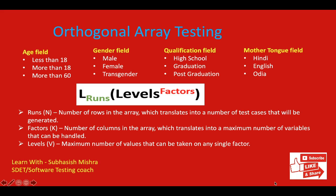Let me explain this using our example. These are the steps we need to follow for orthogonal array testing. We have a form with different fields: age, gender, qualification, and mother tongue, each with different sets of data. First, we determine the number of independent variables. Here we have four different variables — four different factors: age, gender, qualification, and mother tongue.